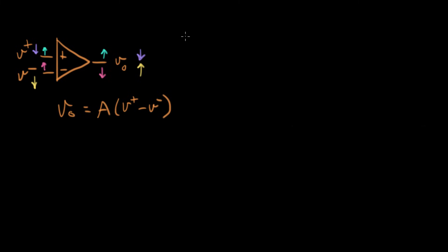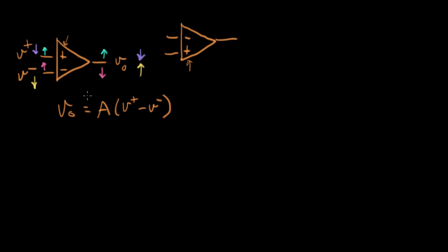Here's one final trick to be aware of. You're going to see a schematic symbol where the inverting input is on top and the non-inverting input is on the bottom — it's the same op amp, just drawn differently. As you look at a schematic with an op amp, one of the first things you want to do is glance and see what order these symbols are in. Keep that in mind as you're reading the circuit. Now let's move on and build something with our op amp.